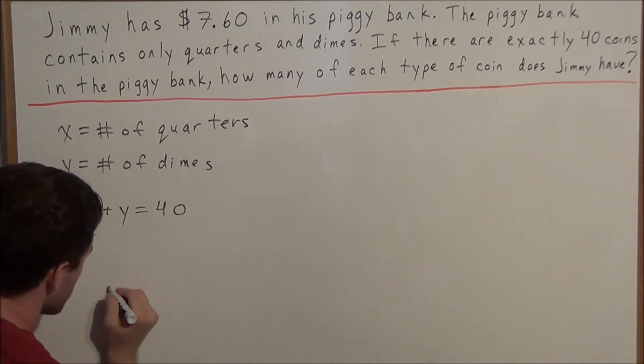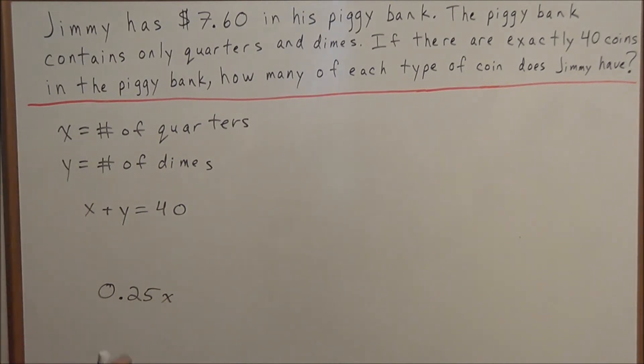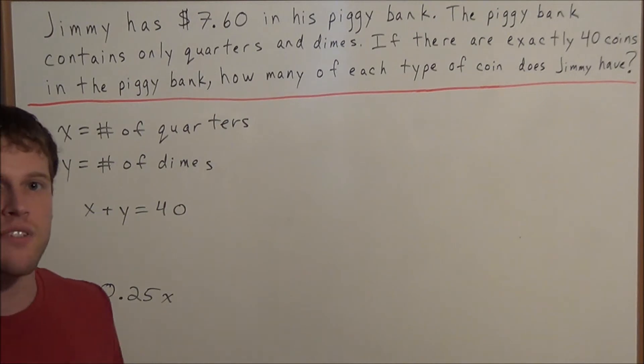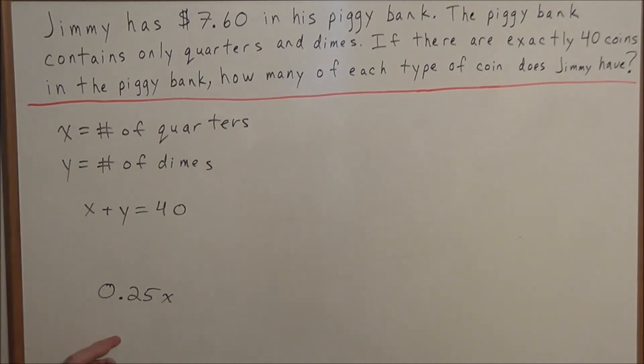We have 0.25 times x, because remember x is the number of quarters, so if we multiply 0.25 times x, this would tell us the amount of money that Jimmy has in quarters.